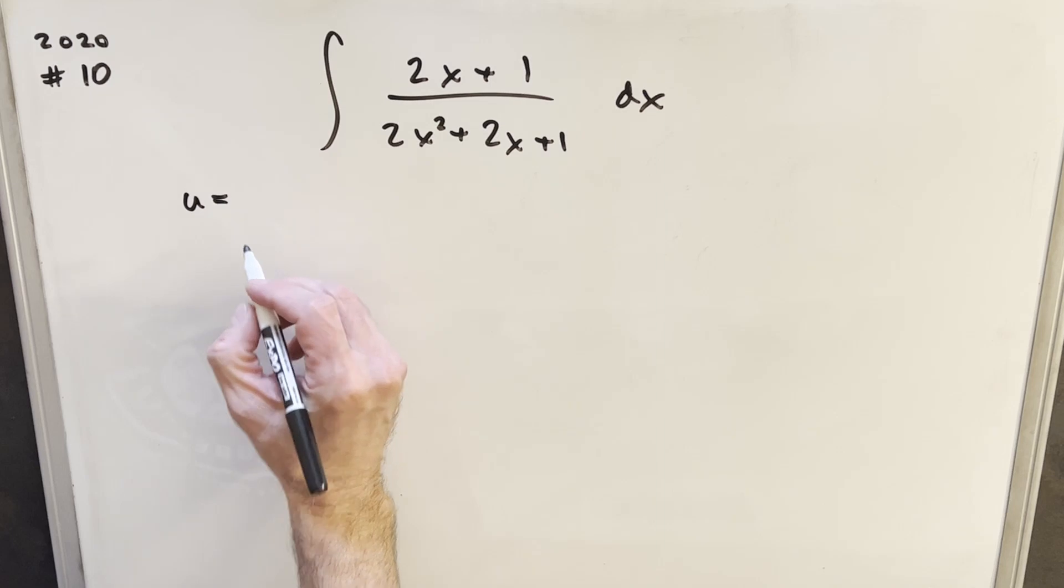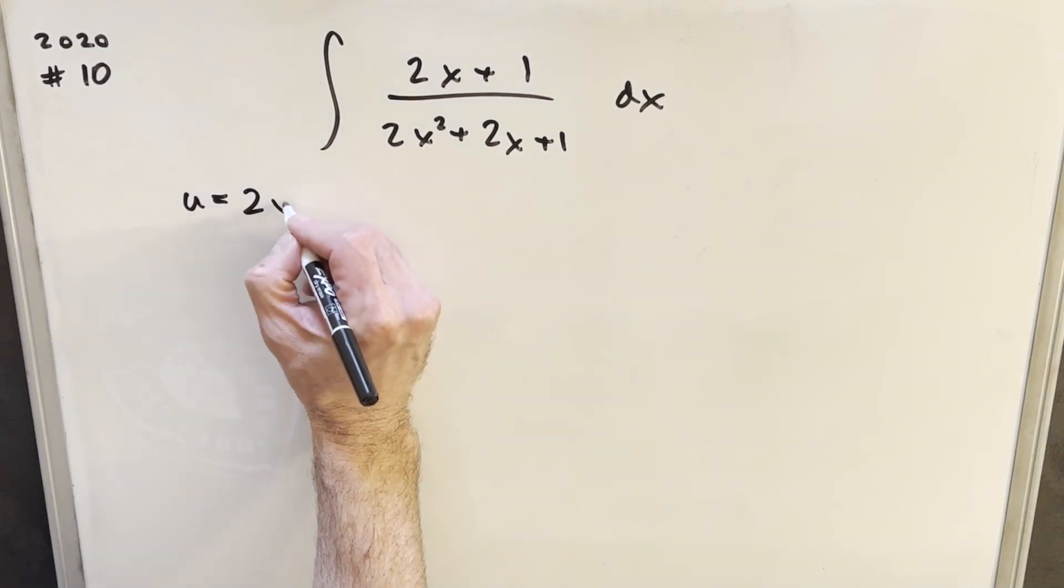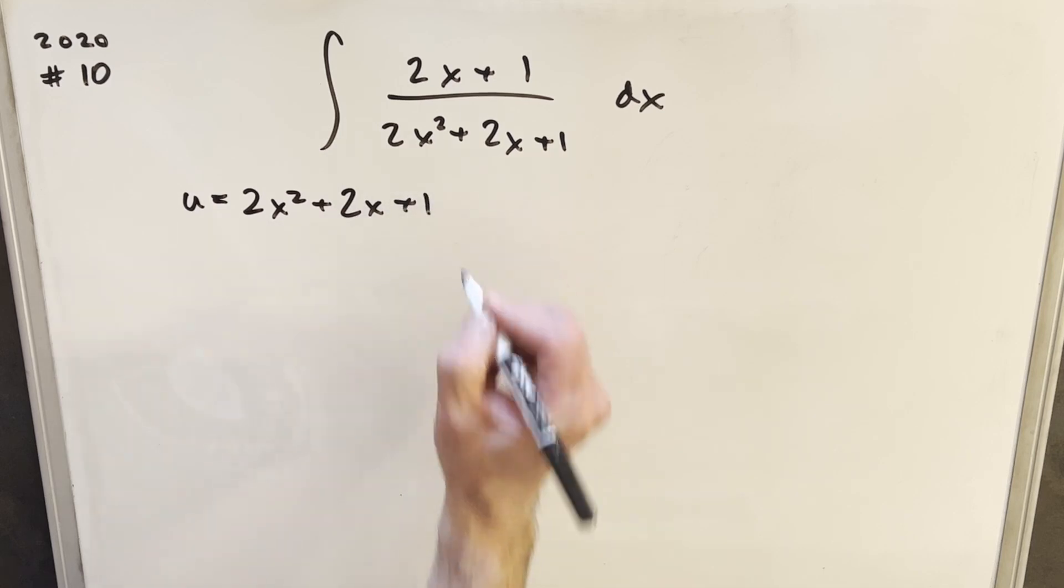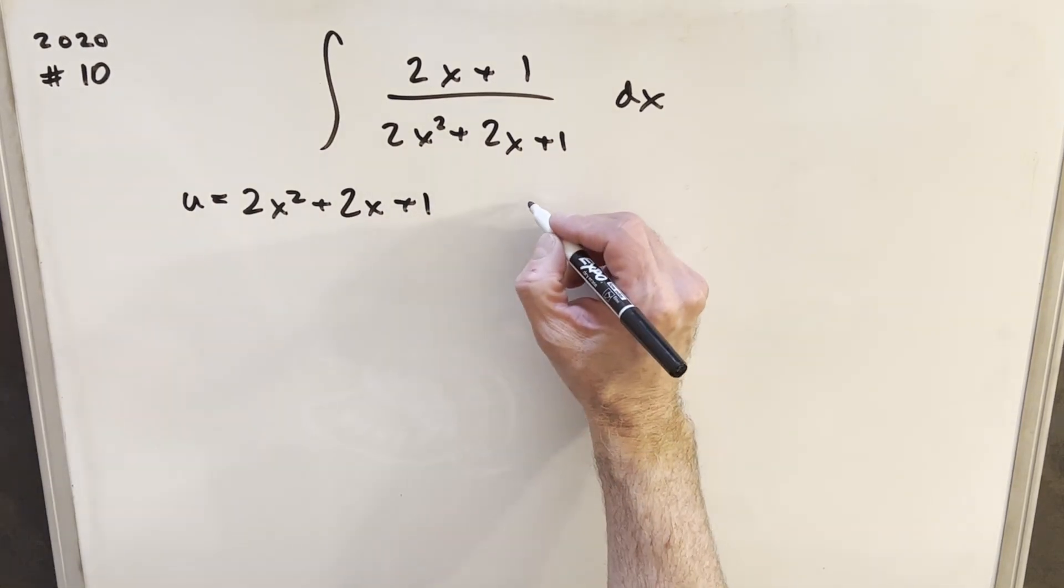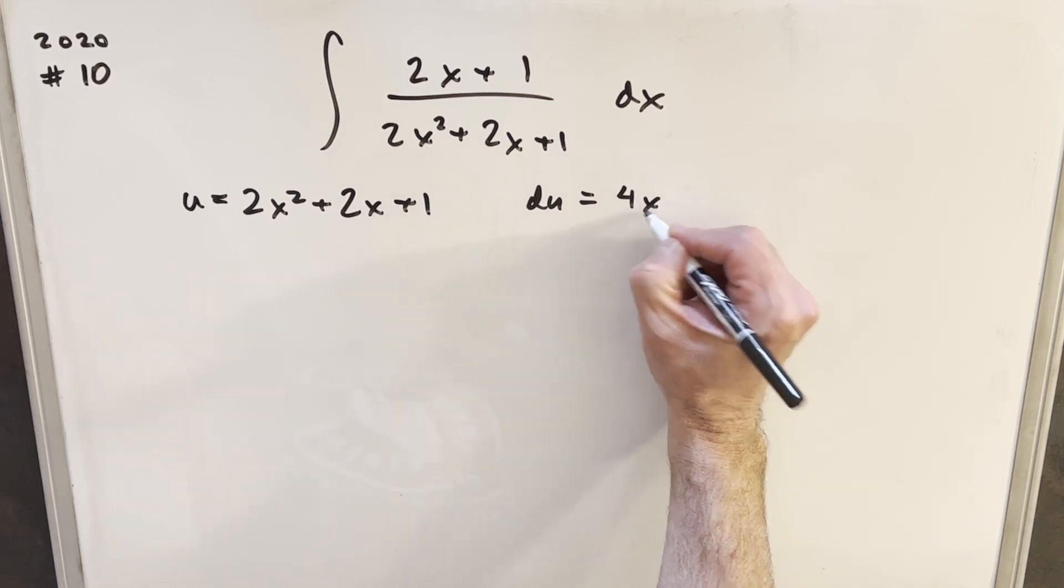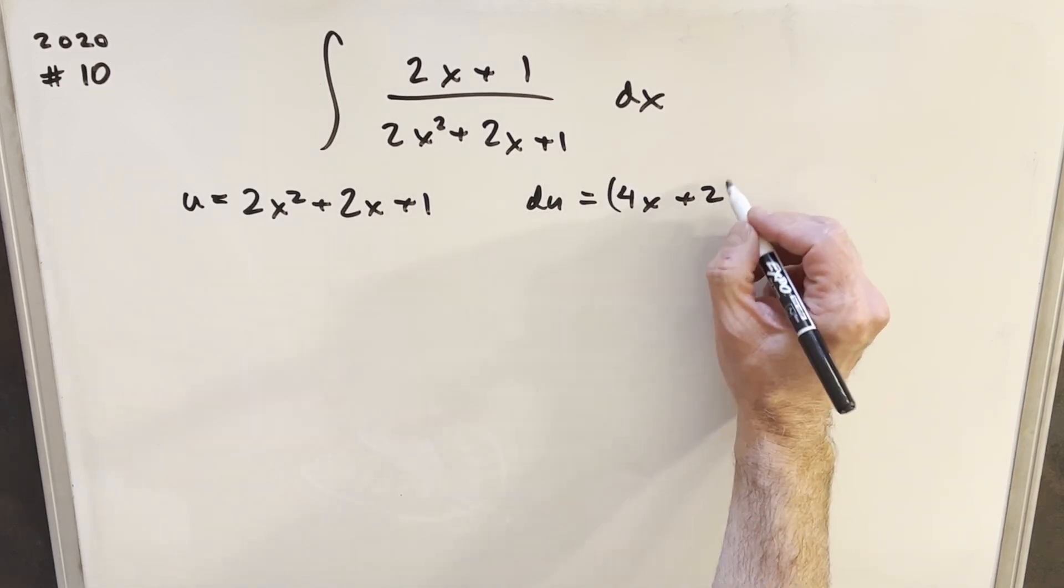Let's see what happens if I make my u equal to the whole denominator. So we'll call u equal to 2x squared plus 2x plus 1. Then taking a derivative, my du value, derivative of this we're going to have 4x plus 2 dx.